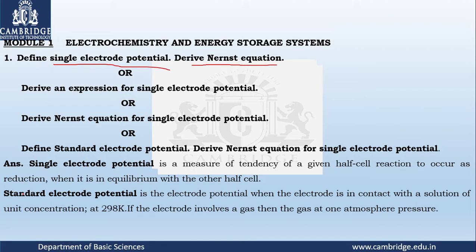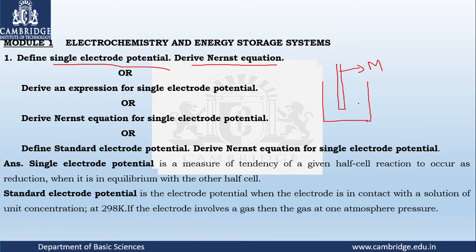It is a measure of tendency of a given half cell reaction to occur as reduction when it is in equilibrium with the other half cell. A single electrode means a metal rod in contact with its own ions. Let me draw a small diagram: this represents the metal rod M — it can be zinc, copper, etc. — and the solution present here contains metal ions M-n-plus. If it is copper, it contains copper ions; if it is zinc, it contains zinc ions.